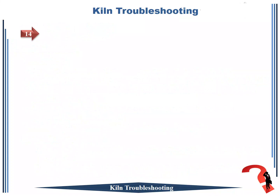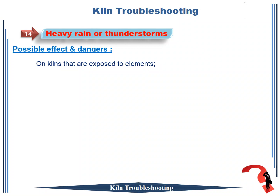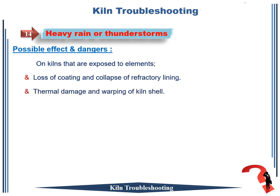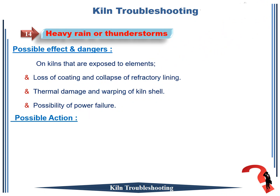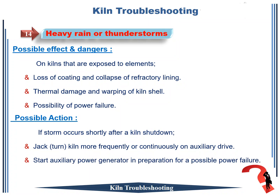Rotary kiln troubleshooting number 14: heavy rain or thunderstorms. Possible effects and dangers on kilns that are exposed to the elements: 1. loss of coating and collapse of refractory lining; 2. thermal damage and warping of kiln shell; 3. possibility of power failure. If storm occurs shortly after a kiln shutdown: 1. turn kiln more frequently or continuously on auxiliary drive; 2. start auxiliary power generator in preparation for a possible power failure.